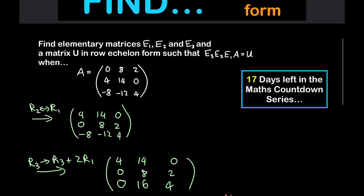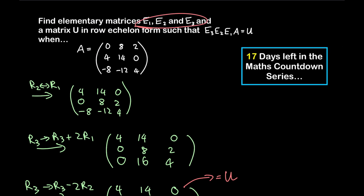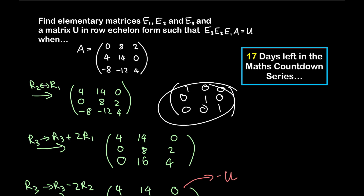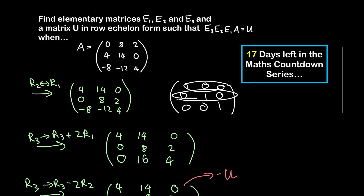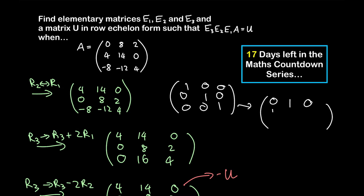An elementary matrix is obtained by performing the same row operation on the identity matrix. For E1, we swapped rows 1 and 2 of the 3 by 3 identity matrix. So row 2 of the identity becomes row 1, giving 0, 1, 0; and row 1 becomes row 2, giving 1, 0, 0; with row 3 unaffected as 0, 0, 1. This is elementary matrix E1.